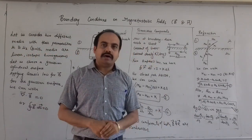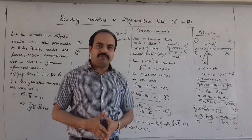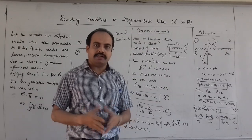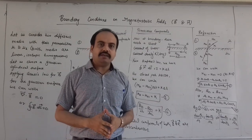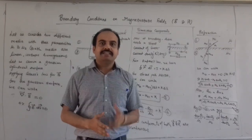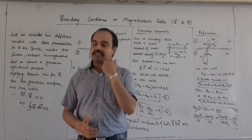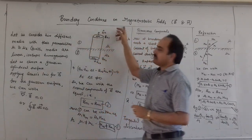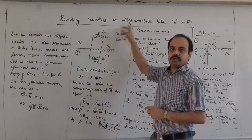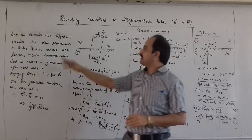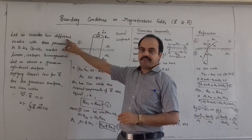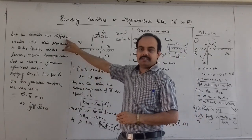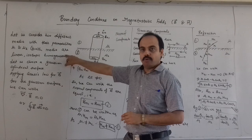For a single medium, the magnetic field intensity H and B both are continuous. But if we take two media and there is an interface, then we have to apply the boundary conditions for both B and H. So let us consider two different media with permeabilities mu1 and mu2.